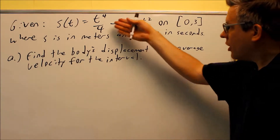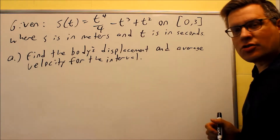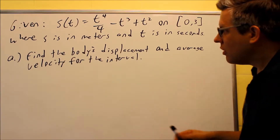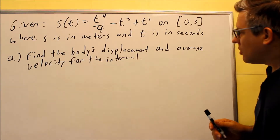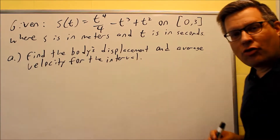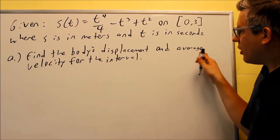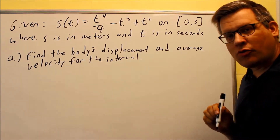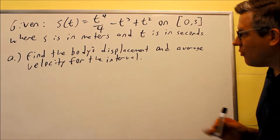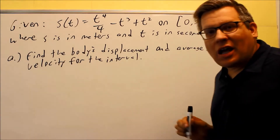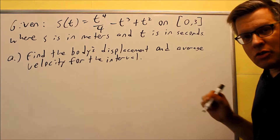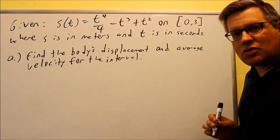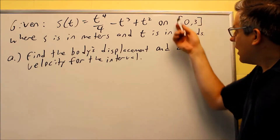For this problem, we're given a position function and we're going to do three different parts. Here's the first one: find the body's displacement and average velocity for the interval. You might think that velocity requires us to take a derivative, but actually it's not the case for this one because it's talking about average velocity. What we're first going to do is find out the total amount of distance traveled in the time interval.